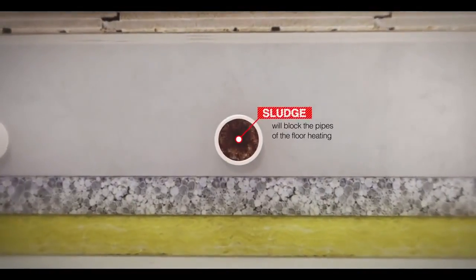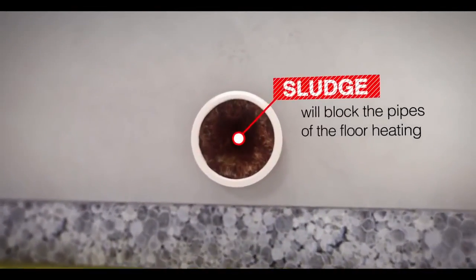The plastic pipes in the floor heating are slowly being covered by the corrosion products. Eventually the forming of sludge will lead to a collapse of the closed loop.